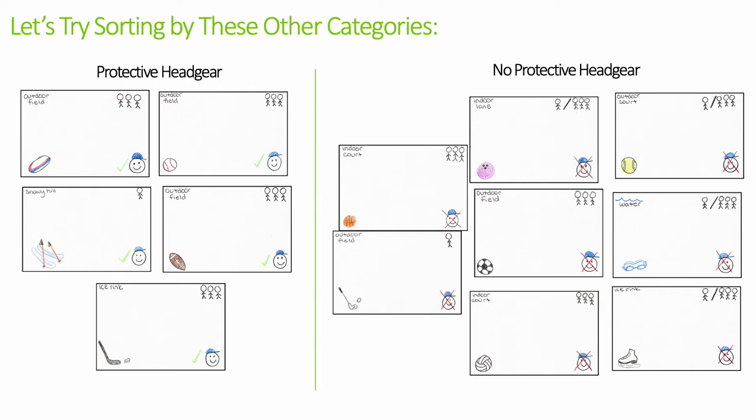Interesting — it looks like according to what we sorted last time, the sports in the 'could be either individual or team' category are only on the no-protective-headgear side. It's important to make these kinds of connections in order to get a fuller understanding of the material. Let's flip them over to see what kind of terms they are.